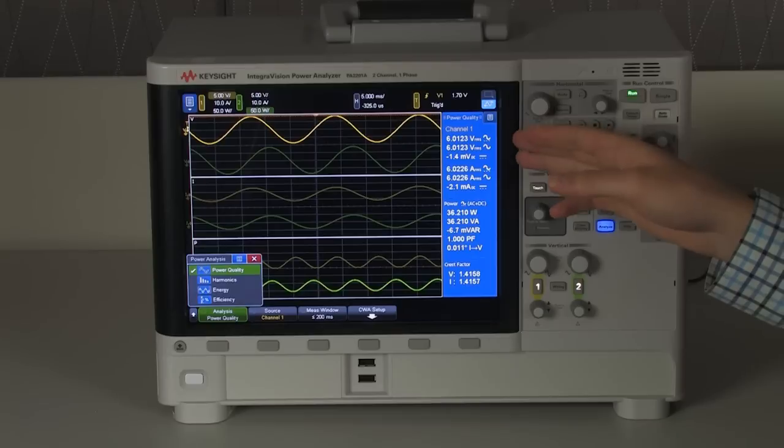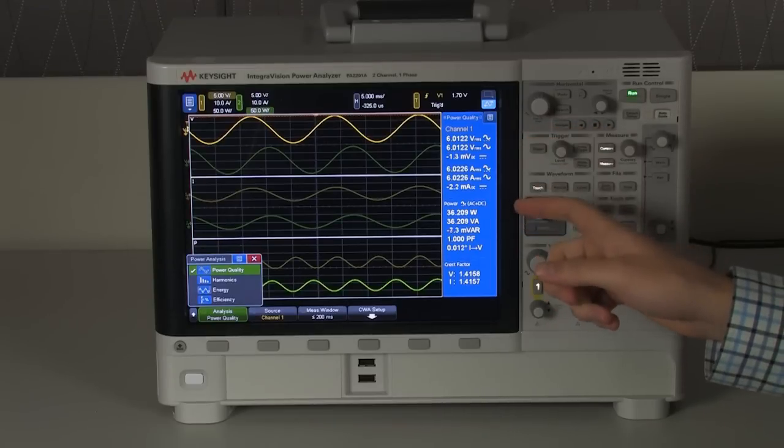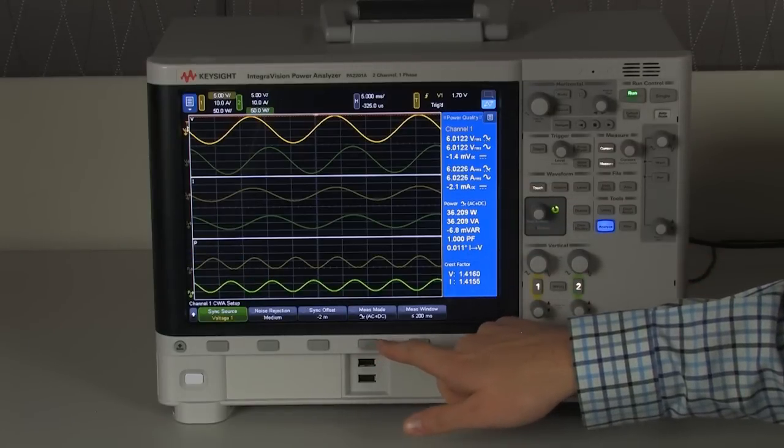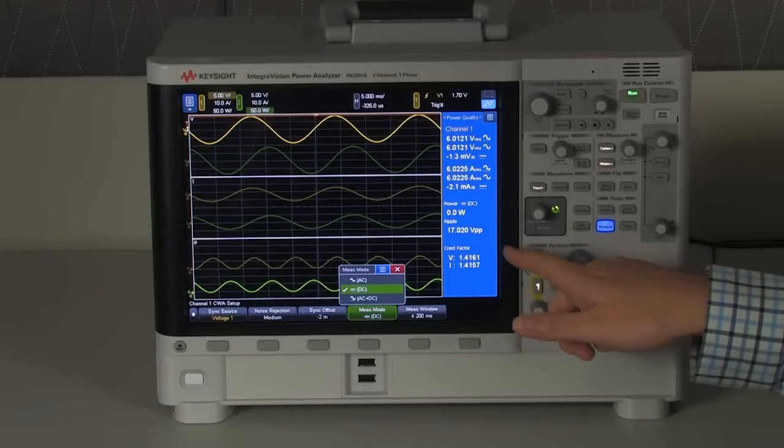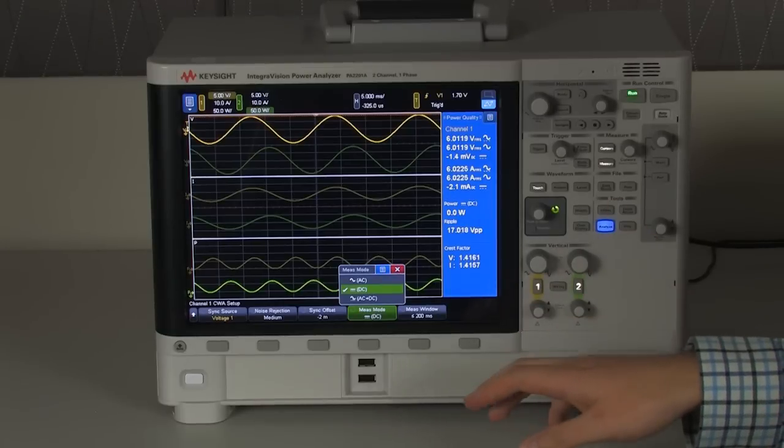Our first major menu is the power quality menu. We can measure AC voltage, AC current, DC voltage, DC current, instantaneous power, power factor, crest factor. And we can also change the mode to be DC-only mode. And we can then see the ripple on our DC power supply if we were using one to know how good of a quality power supply it is.